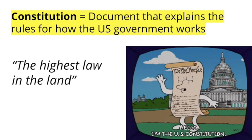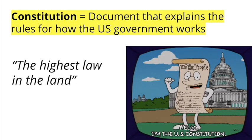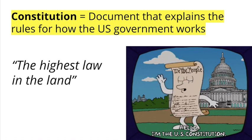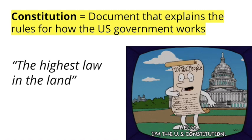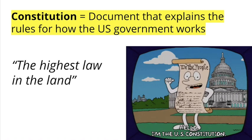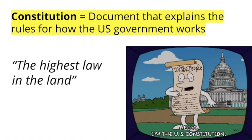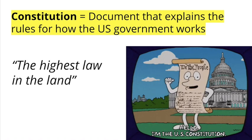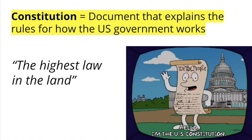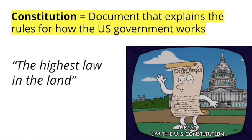The United States Constitution contains a really important list of our rights. The Constitution is a document that basically spells out the rules for how our national government works. It's a law, but it's more important than any regular law. It's like the highest law in the land, meaning every national, state, and city law has to conform to the rules in the Constitution.